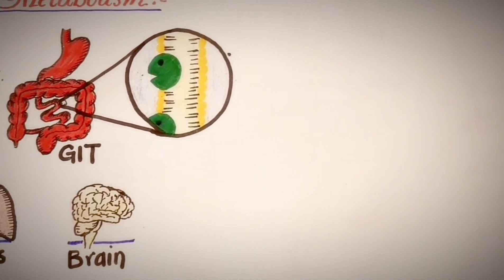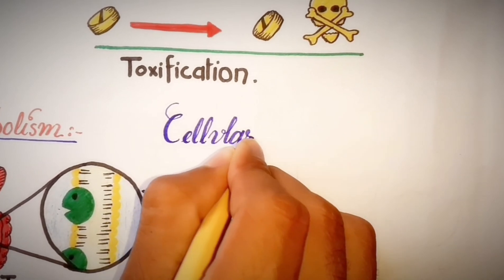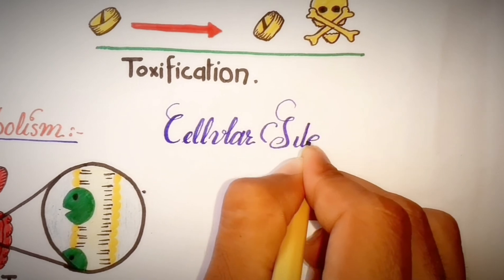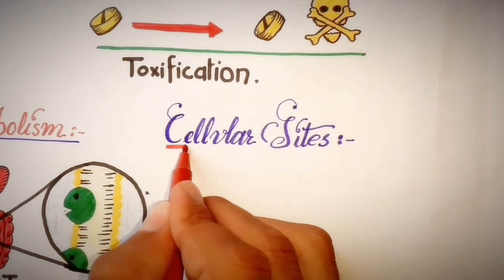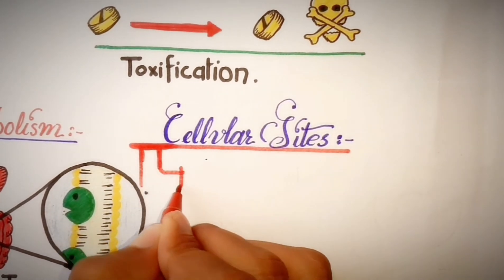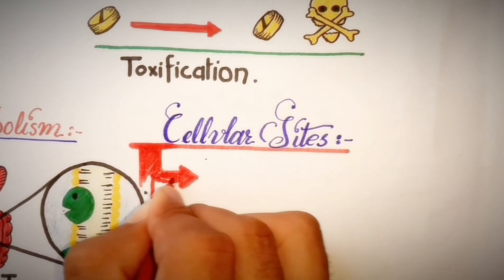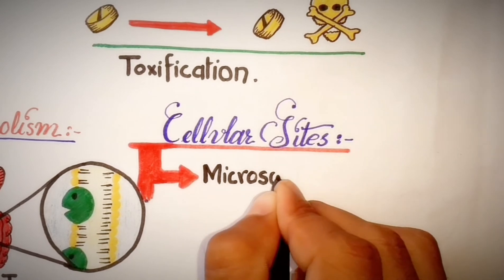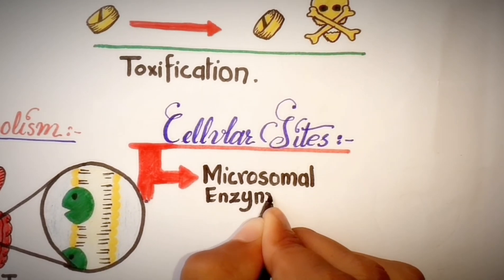Cellular sites of drug metabolizing enzymes: At the subcellular level, these enzymes may be located in the endoplasmic reticulum, mitochondria, cytosol, lysosomes, or even in the nuclear envelope or plasma membrane. Enzymes are divided into two types: microsomal enzymes and non-microsomal enzymes based on subcellular site.